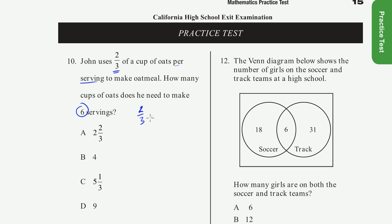And we could even put units there. Well, that just confuses it. Two-thirds per serving times six servings. So that's just six times two-thirds.